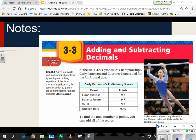So let's look at some information here using adding and subtracting. At the 2004 U.S. Gymnastics Championship, Carly Patterson and Courtney Kupitz tied for the all-around title. Here were the scores for Carly Patterson. So what if we said, what's her total score if you added these up? Well, the most important thing you're going to have to do with this is make sure you have the place values lined up properly, and then make sure you know how to add.